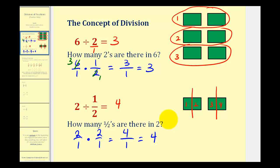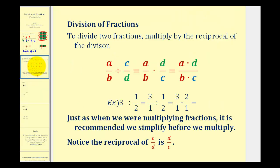Let's go ahead and formalize this. To divide two fractions, we multiply by the reciprocal of the divisor. We can write every division problem as a multiplication problem by multiplying by the reciprocal of the divisor. Notice here we're dividing by c over d, and when we convert to multiplication, we're multiplying by d over c.